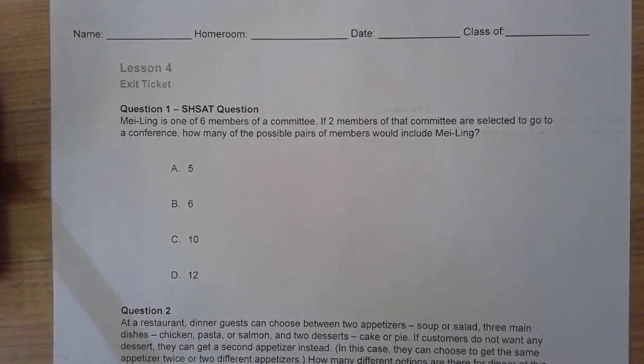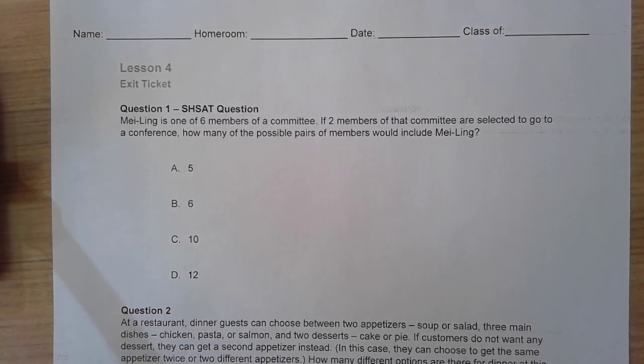Mei Ling is one of six members in a committee. If two members of that committee are selected to go on a conference, how many of the possible pairs of members would include Mei Ling?